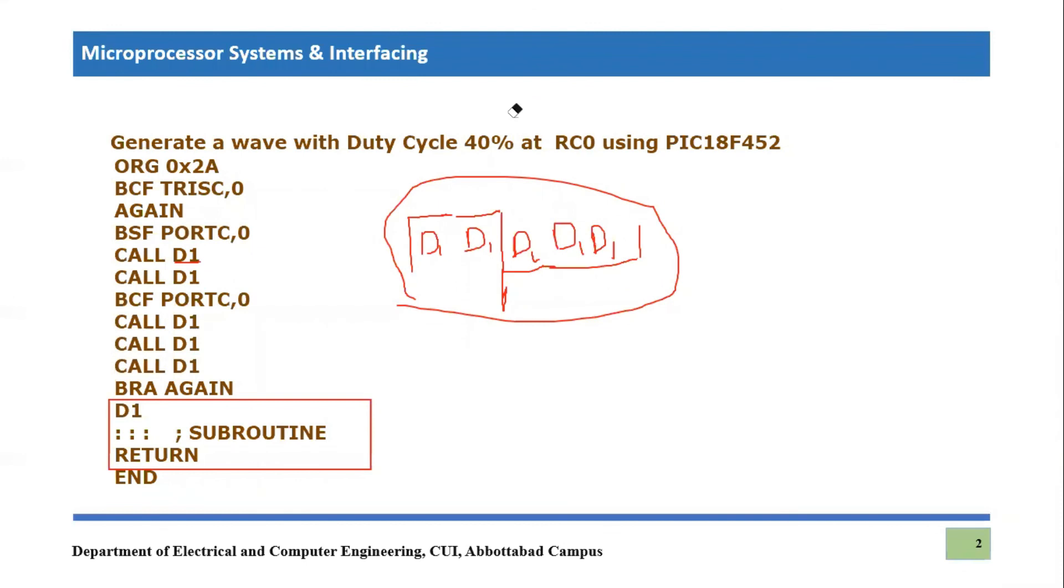Okay. One thing which can be understood from this, we can also calculate their frequency and time period. Time period is the total time for the total cycle. So time period would be equal to five times D1 here, because you know that D1 is repeated around five times in this. So let's say D1 is around one millisecond. So if D1 is equal to one millisecond, then time period would become equal to five times D1. That means five milliseconds.